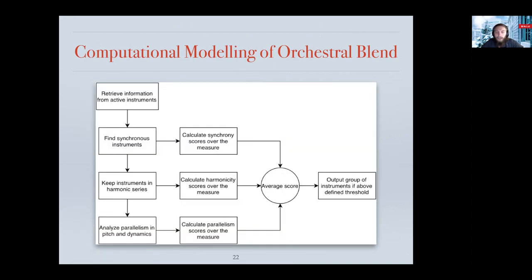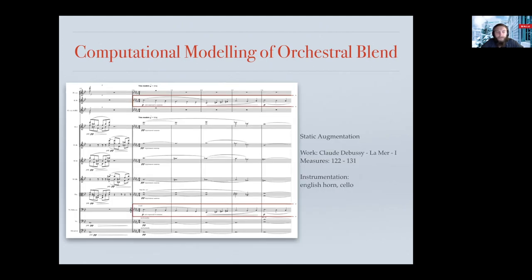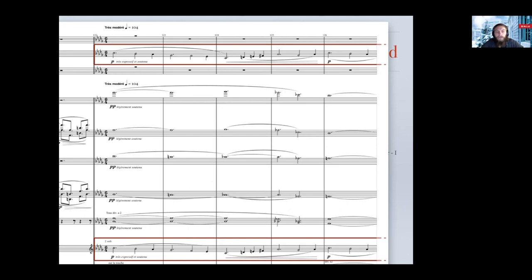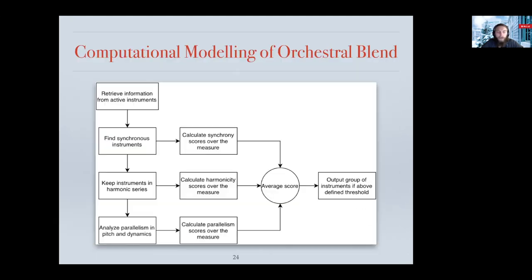Finally, we look at the evolution in pitch and dynamics. Using the blend example from Debussy again, we compare each note for each instrument and evaluate if it goes higher, lower, or stays the same. Looking at the notes played by the English horn in measure 122, the second note is lower, and the third is lower as well — and the same for the cello. We do a similar evaluation for dynamic changes. Once these tests are done, their scores are averaged, and if it is above a decision threshold, the group of instruments is output as a potential blend. A threshold set at 100 means everything has to be perfect: every note played in perfect synchrony, with perfect harmonicity and perfect parallelism in pitch and dynamics.